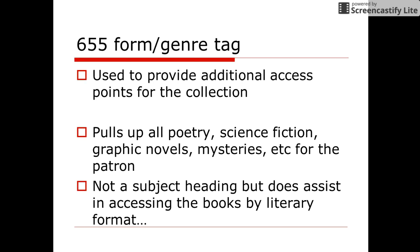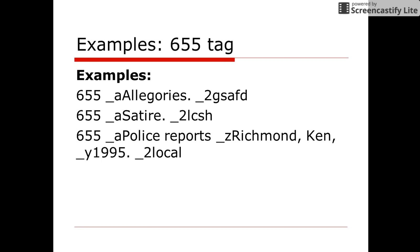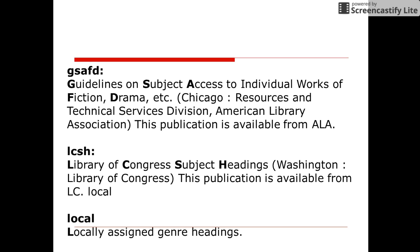Local terms are fine, but you need to record the terms and be consistent in the application of the genre for similar works. This helps you create a bookstore approach to your cataloging so that it is easily retrieved. Some examples of the 655 tag are provided. GSAFD stands for Guidelines on Subject Access to Individual Works of Fiction, Drama, Etc. LCSH refers to the Library of Congress Subject Headings, available from the Library of Congress.